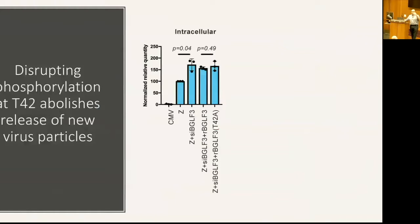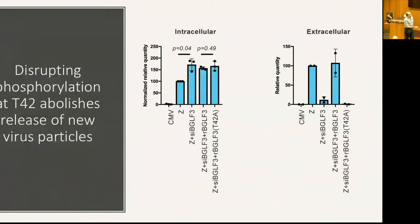We looked at viral DNA replication to verify early events are intact. When you introduce the T42A mutation, viral DNA replication is unaffected. But when you look at the amount of virus produced, changing threonine 42 to alanine basically abolishes production of new virus particles. So a single phosphorylation site abolishes production of new virus particles.